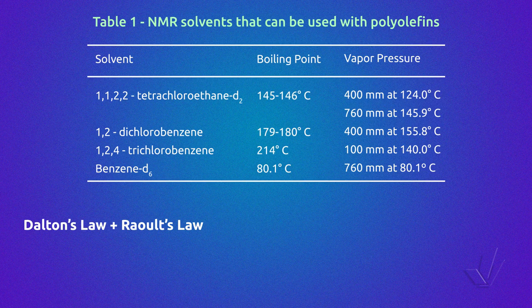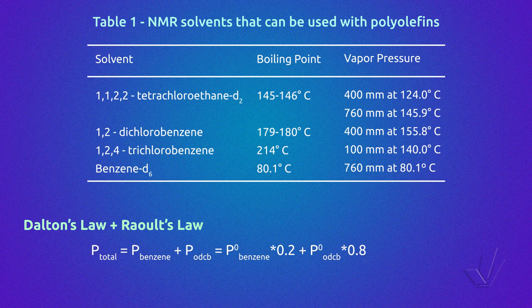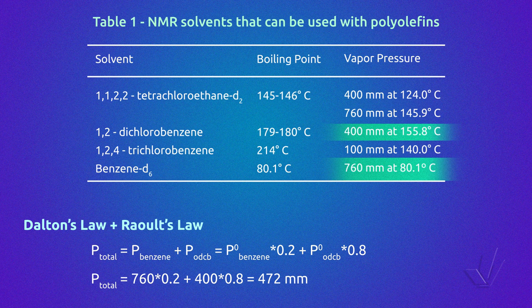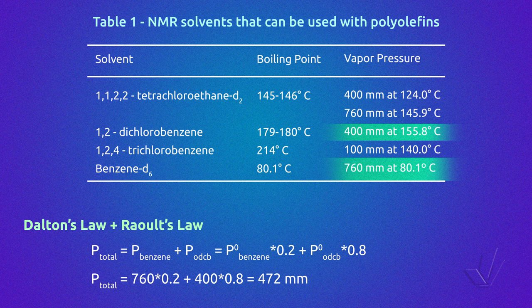Thanks to Dalton and Raoult's laws, we know that the total pressure of a mixture of solvents is the sum of their molar fraction multiplied by their vapor pressure. Using a mixture of 20% of deuterated benzene and 80% of orthodichlorobenzene, the total pressure is below atmospheric pressure. Taking into account that we also have the polymer in the NMR tube, there is no risk of using benzene as co-solvent even at high temperature.